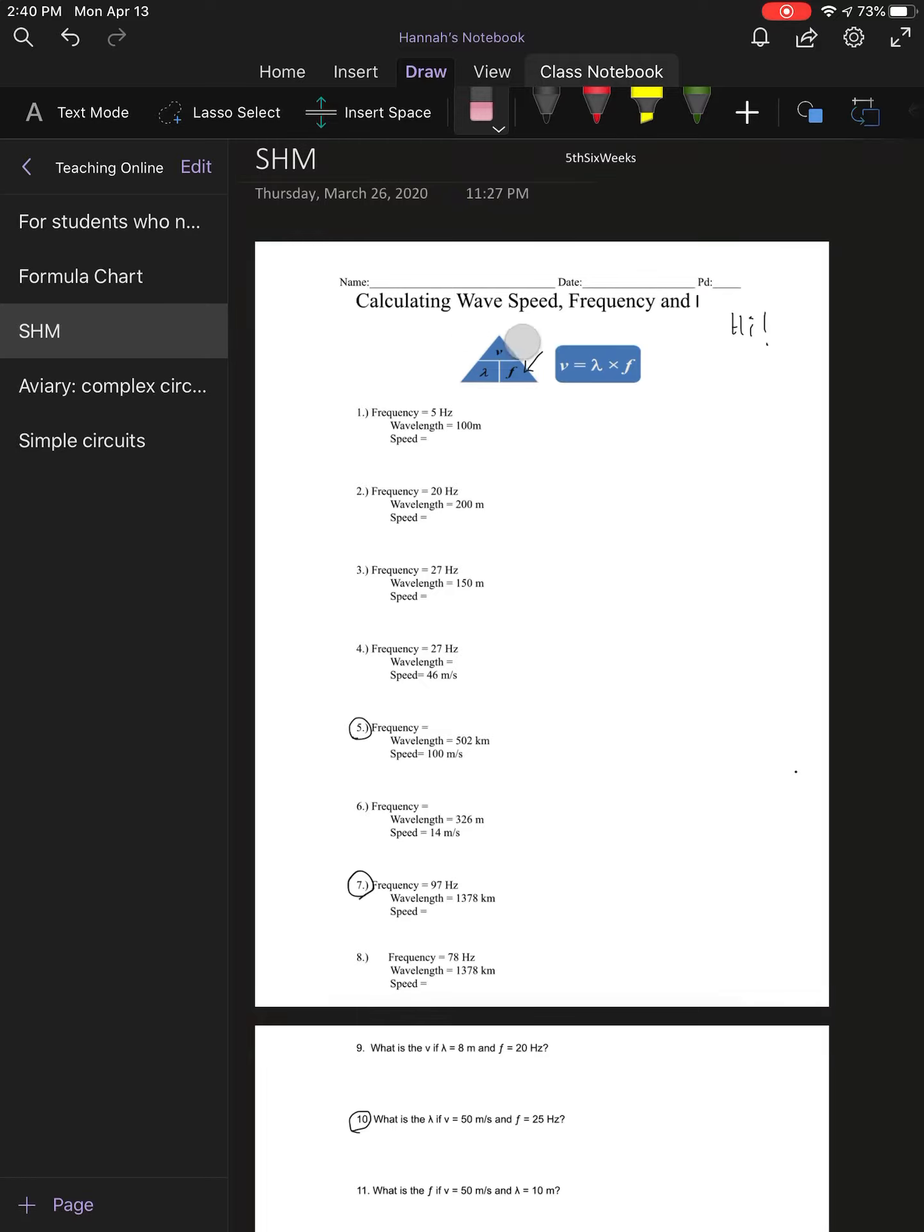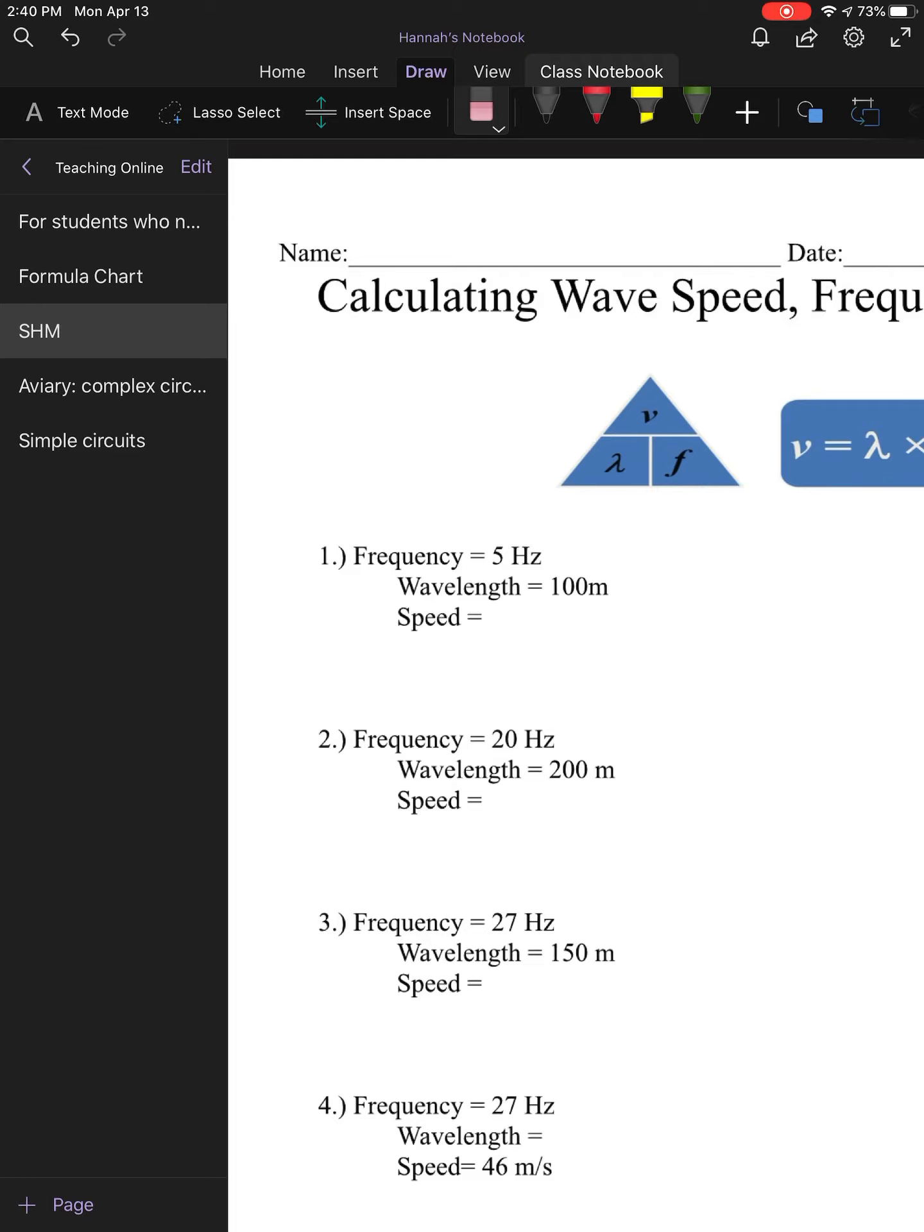We have our nice triangle to help us derive our formulas. To find velocity, you cover up the V, and what's left is lambda right next to frequency, and since they're across from each other, we multiply them. For solving for wavelength, which is lambda, we cover up the lambda and we see that there is V over F, so we solve for wavelength by doing velocity divided by frequency. And finally, to solve for frequency, we cover up the F, and we see that velocity over wavelength gives us frequency.